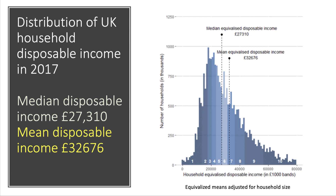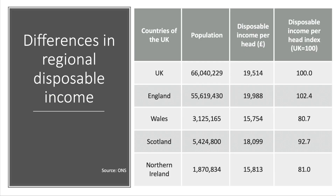The median disposable income — the middle figure in the distribution — was £27,310, while the mean was £32,676. The mean is dragged higher, as you can see from the diagram, by those people at the top end earning significant amounts of disposable income. Those super highly-paid people at the top lift the mean above the median.